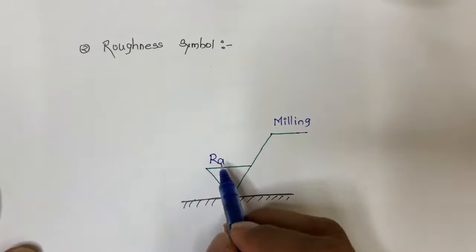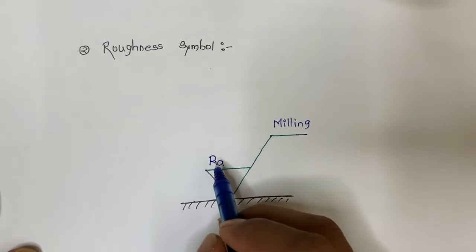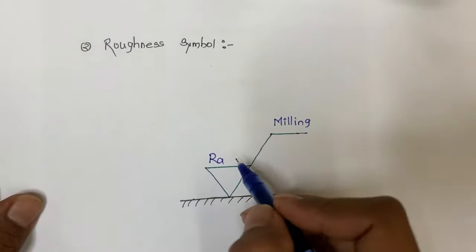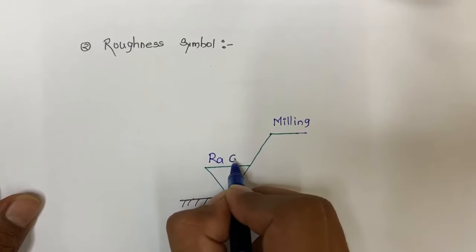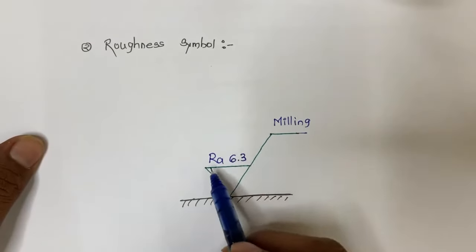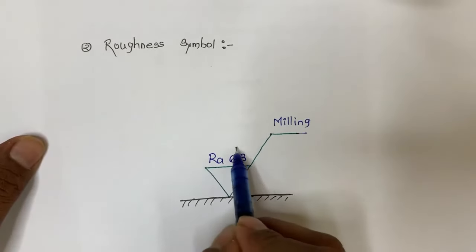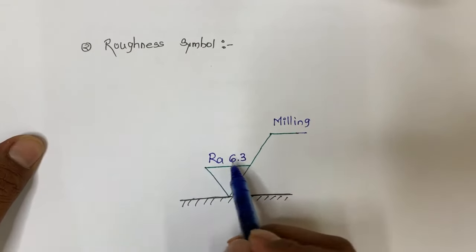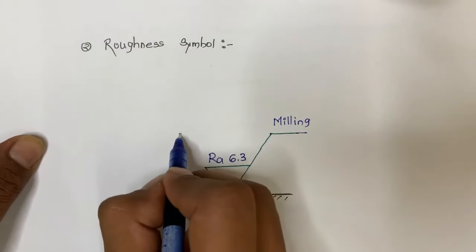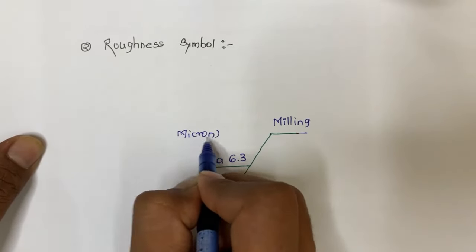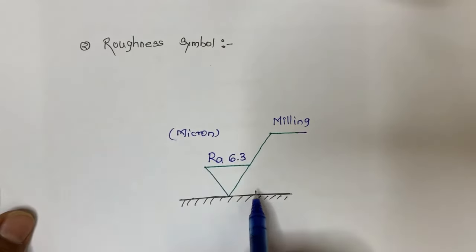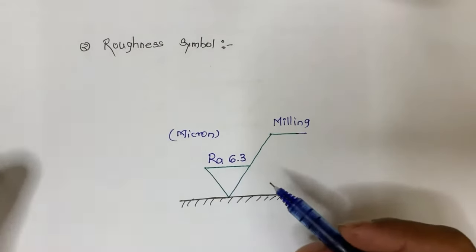Below the horizontal line, the surface roughness value — the arithmetic average RA — is specified. We have discussed the arithmetic average of ordinates. You will find a numerical value here; for example, if the value is 6.3, it represents that the RA value required for this surface is 6.3 microns.